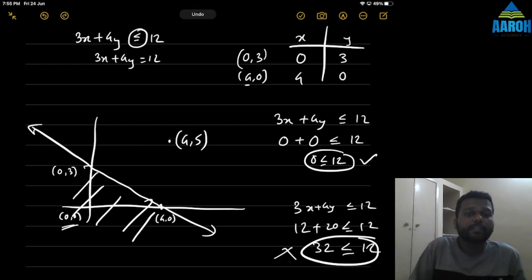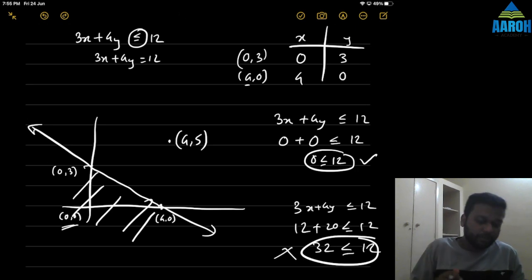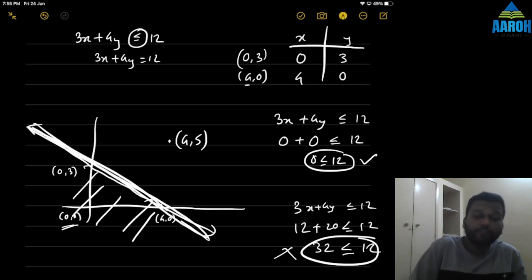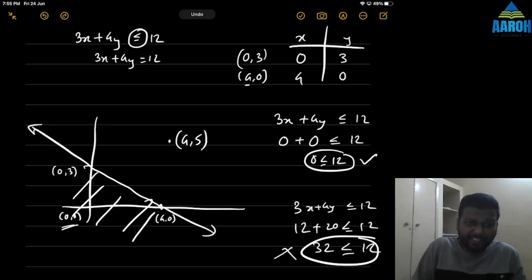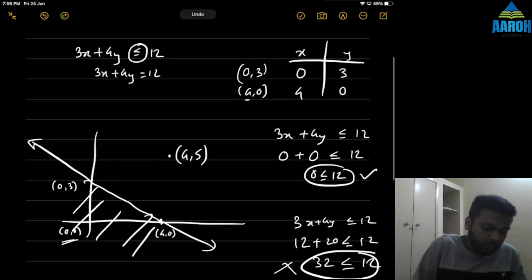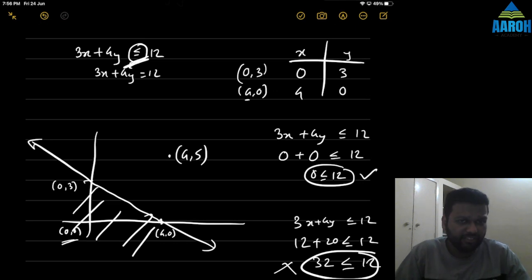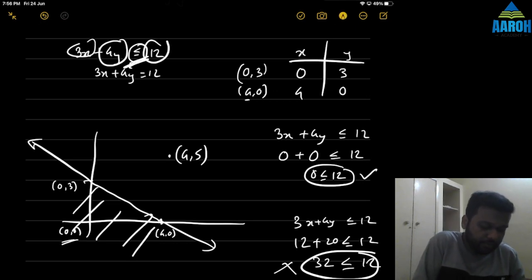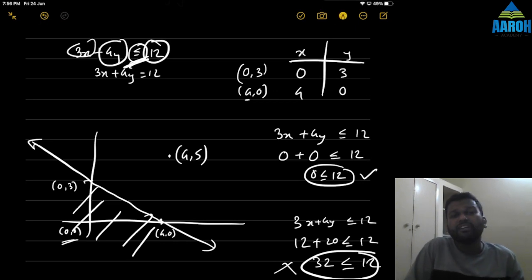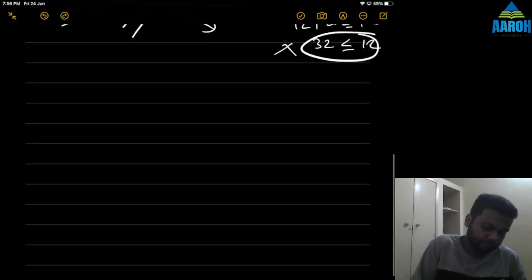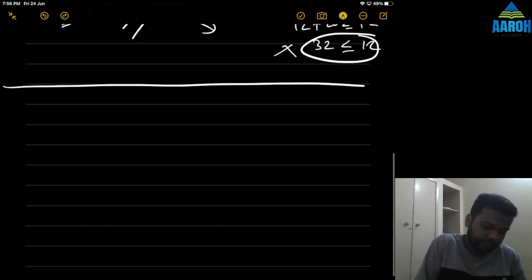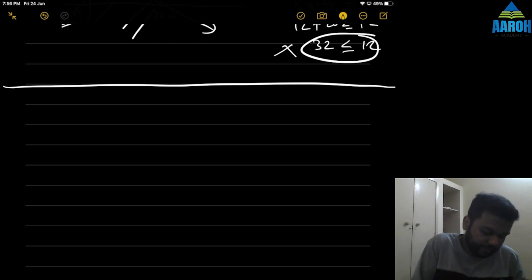That is how you should always find the area. If the line is in the first quadrant and everything is positive, then you can say less than means towards the origin and greater than means away from origin. But you cannot always do that. Let's take another example now and see how to handle that.